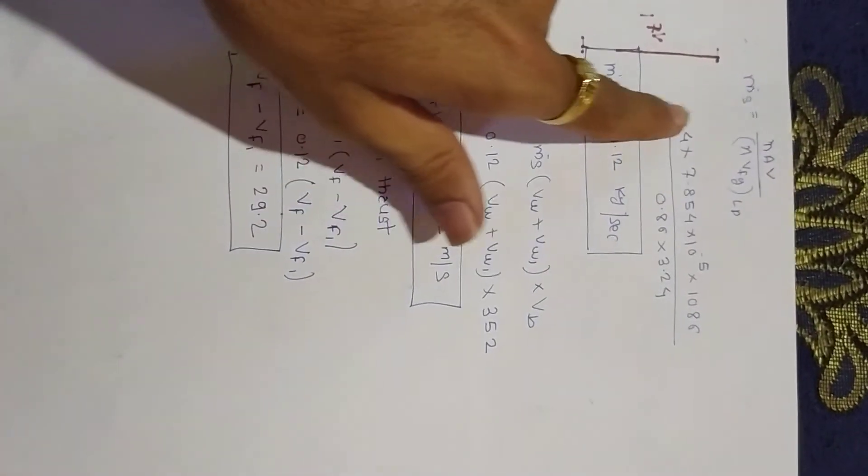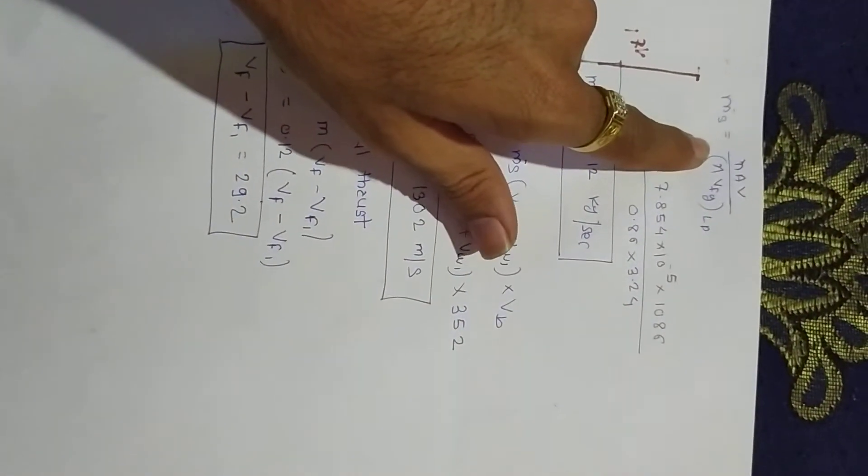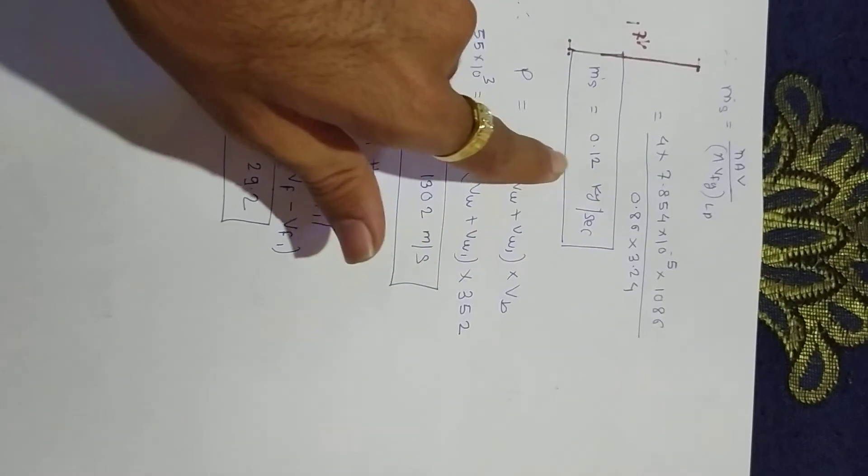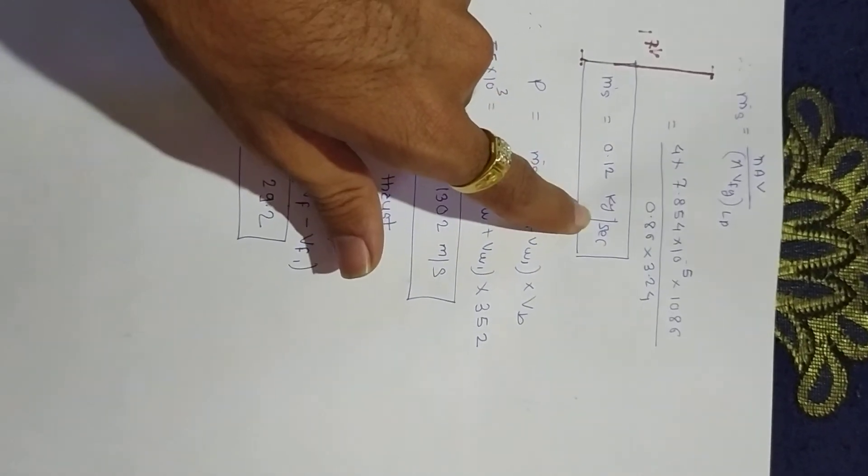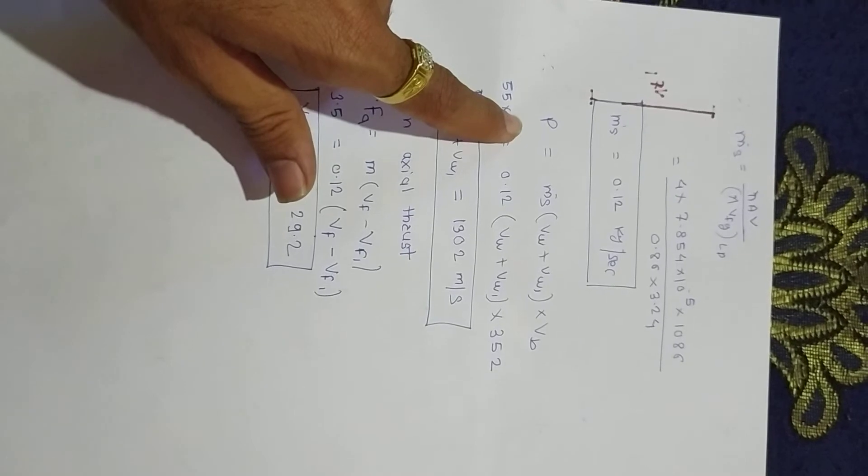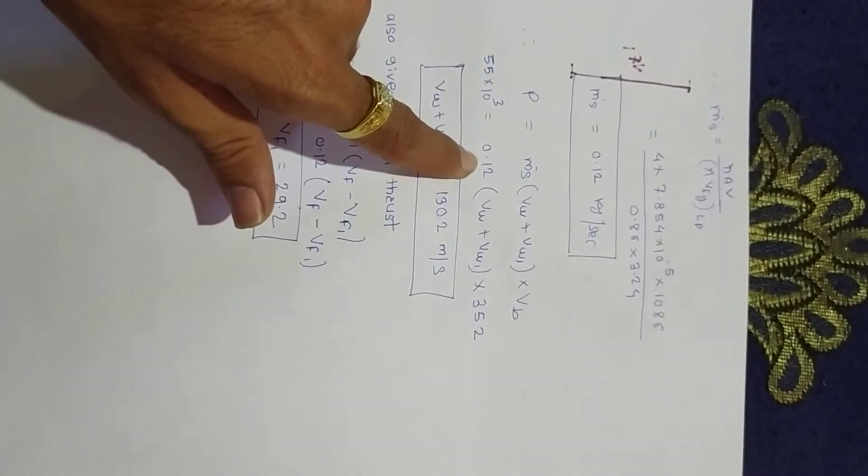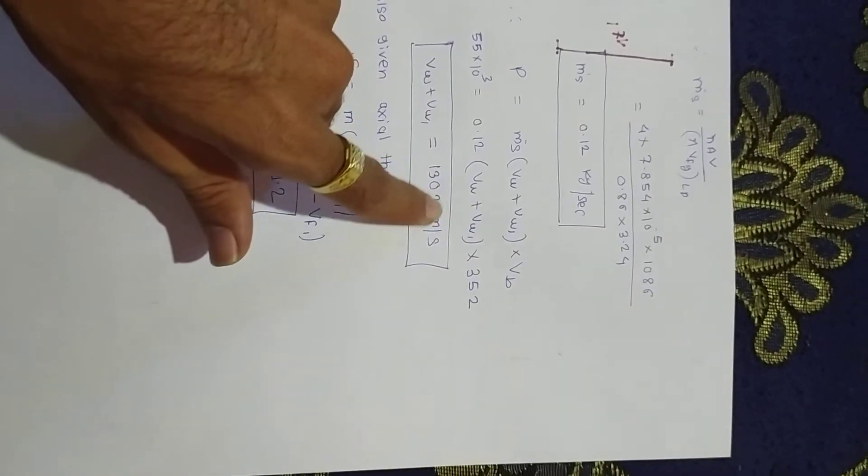Now put all the parameters into the mass of steam formula. We get mass of steam is around 0.12 kg per second.